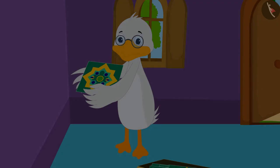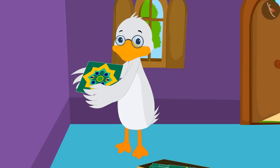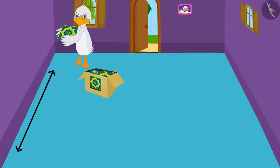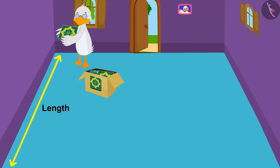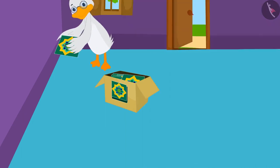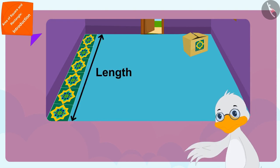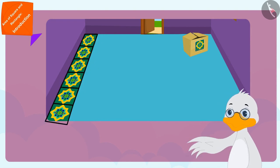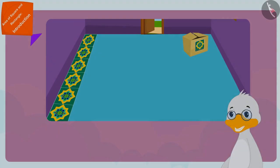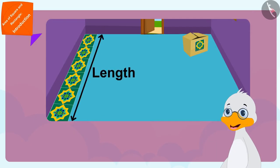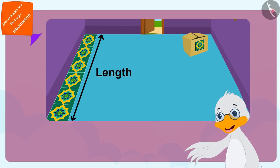Uncle first started laying tiles along the length of the floor of his room. Then uncle saw that there were a total of six tiles in the length of his floor.